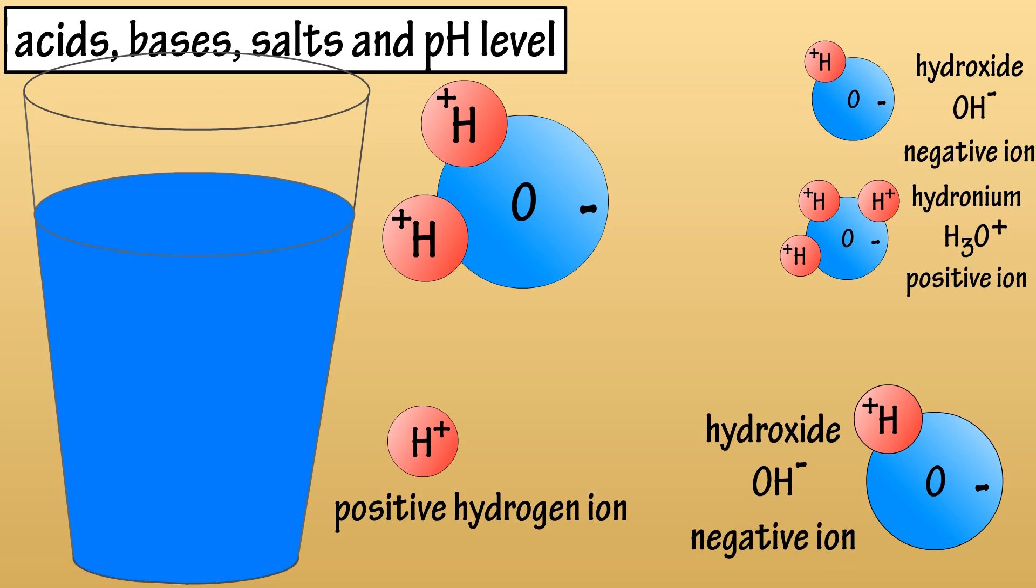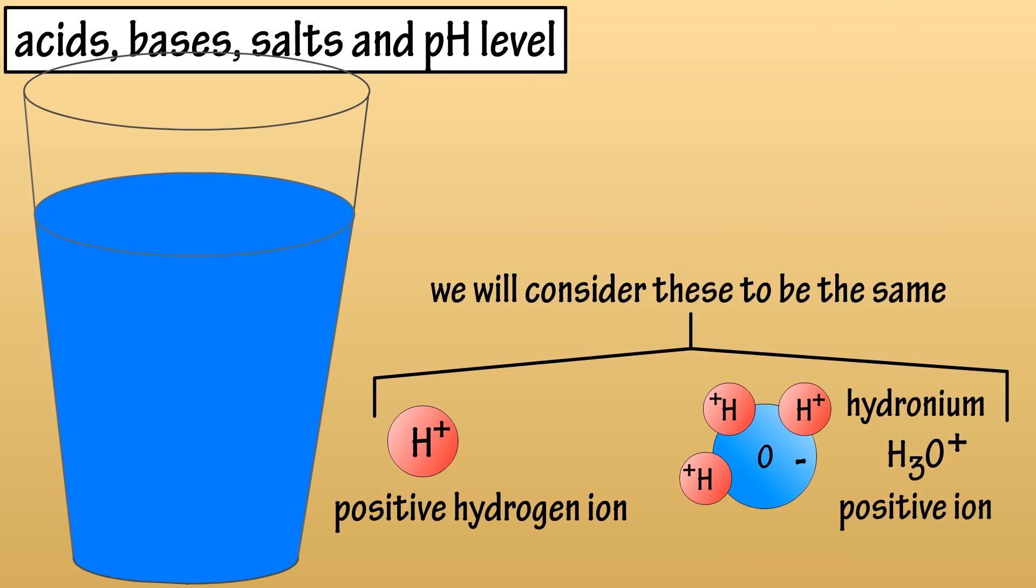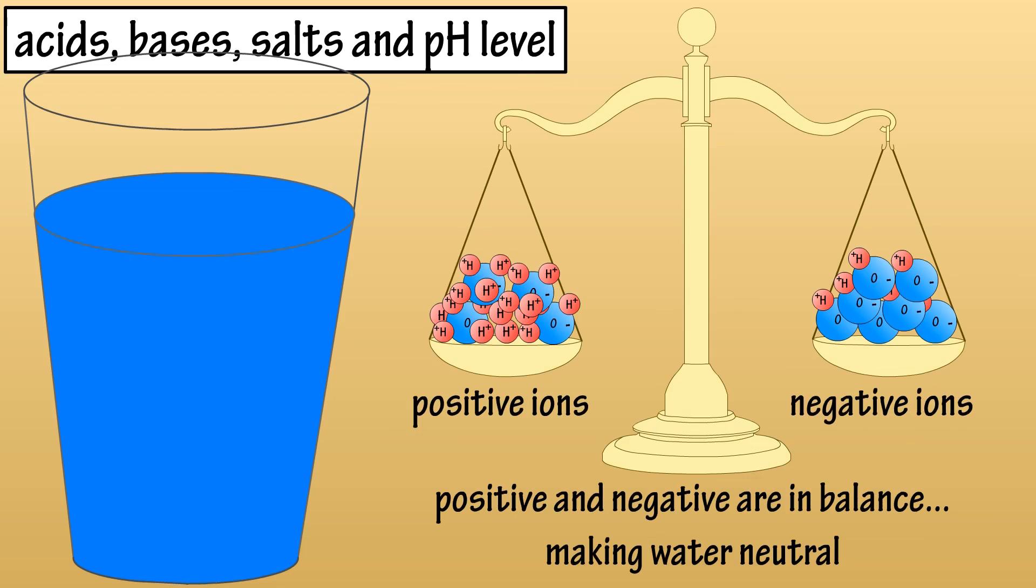This is a reversible reaction as noted by the formula H2O double arrow or reversible reaction, positive hydrogen ion and negative hydroxide ion. The actual amount of these positive H3O or hydrogen ions in water is actually very, very small. To make things easier to understand, we will consider the positive H3O ion and the positive hydrogen ion as one and the same. So, in pure water, the amount of positive hydrogen ions and negative OH ions is the same.